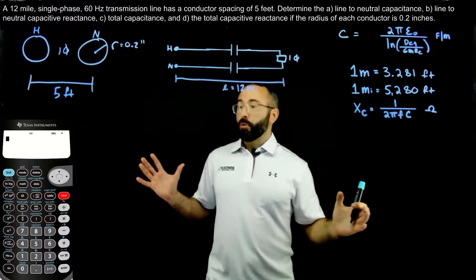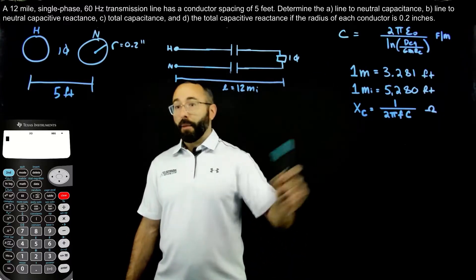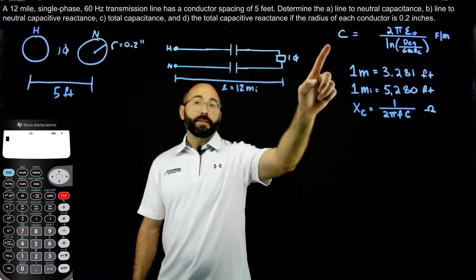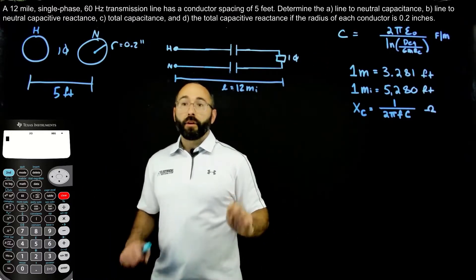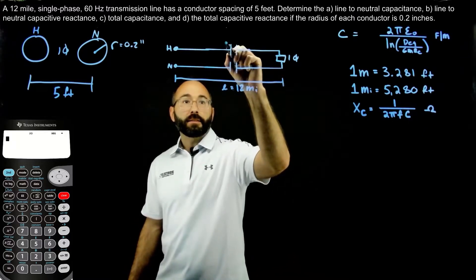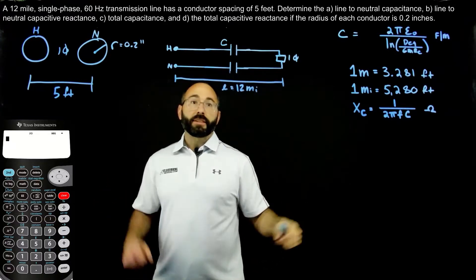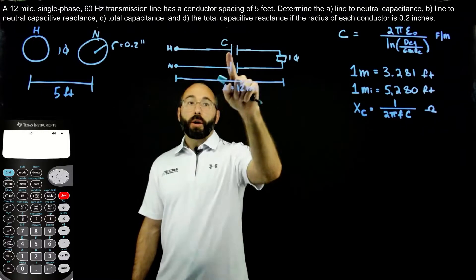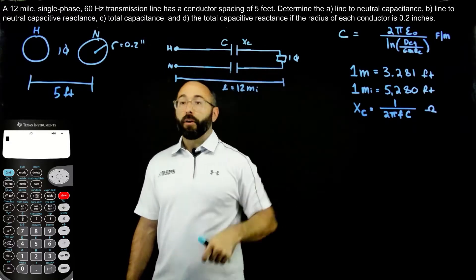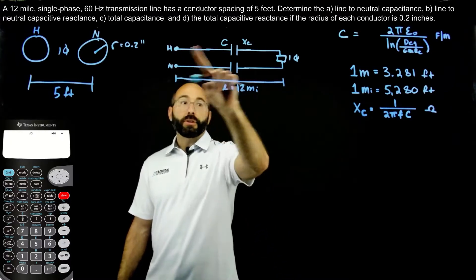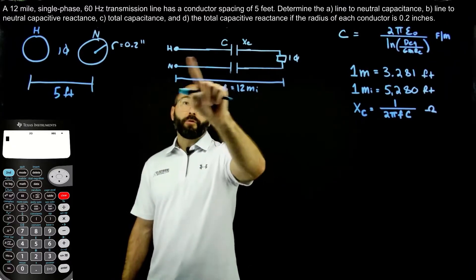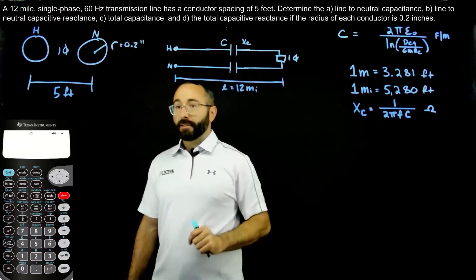This is the same problem as the last one when we were solving for inductance and inductive reactance — instead we're solving for capacitance and capacitive reactance. Just like before, when dealing with a single phase transmission line there are two sets of values. We have the one-way length, same as the line-to-neutral, same as the average, same as the per-phase amount — that's the capacitance from the hot conductor up into the load, essentially just one conductor. For C and D we'll solve for the total capacitance and capacitive reactance from the hot conductor to the load and back through the neutral through the power source, accounting for both conductors.